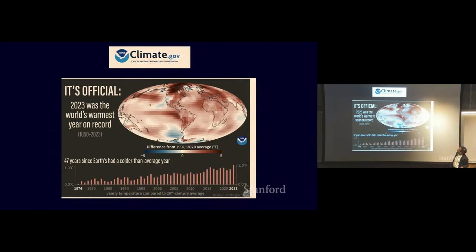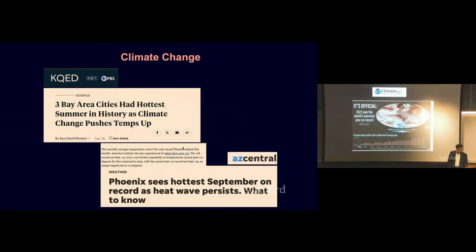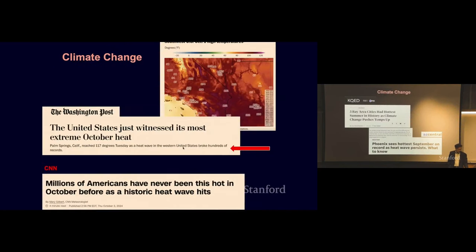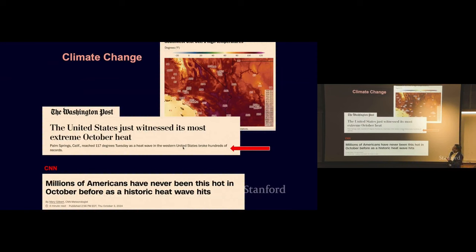Let's start with the unsustainable trends. 2023 was the world's warmest year on record — 46 years since the Earth had a cooler-than-average year. The trend is getting hotter and hotter. Various cities had the hottest summer in history. Phoenix sees its hottest September on record with heat waves persisting over 100 degrees Fahrenheit. The United States just witnessed its most extreme October heat — millions of Americans have never seen it this hot in October before.